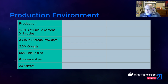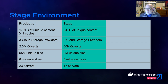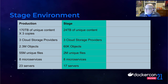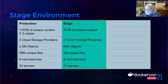We're not yet running as containers. In our stage environment — our certification and integration test environment for testing Merritt with other applications — we have 24 terabytes of unique content, also making use of the same three cloud storage providers. The stage environment has 60,000 objects and 2 million unique files, comprising eight microservices running on 17 servers.